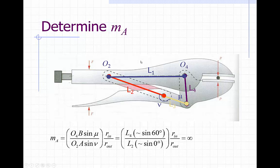We can see that mechanical advantage can be very useful in linkages for crushing things or grabbing things very tightly. Another great aspect is that mechanical advantage can be calculated just by looking at the configuration of the linkage and measuring the angles — so it's purely a position analysis related item.